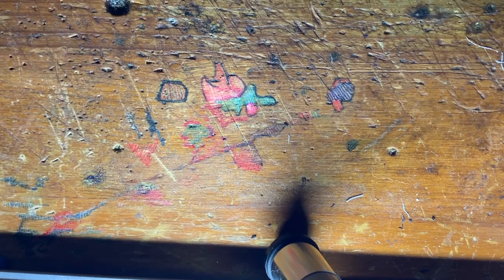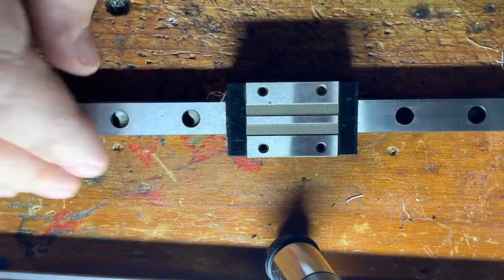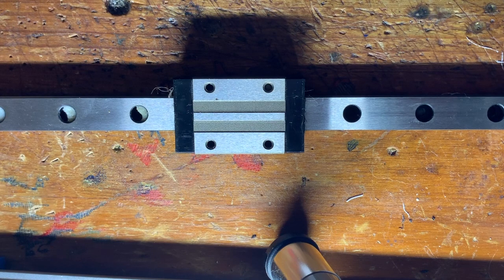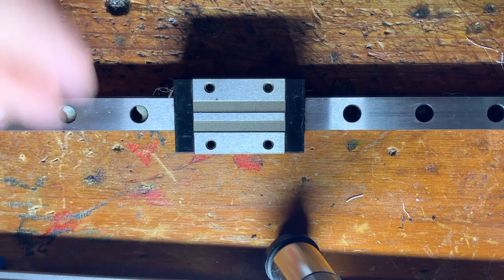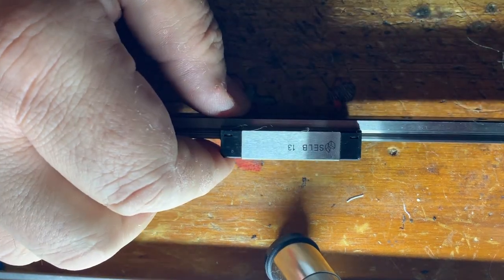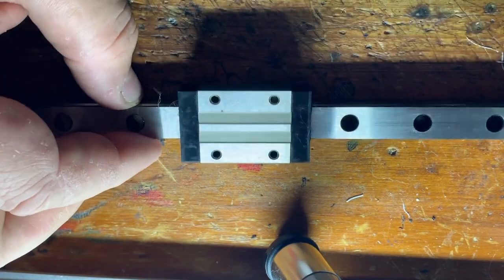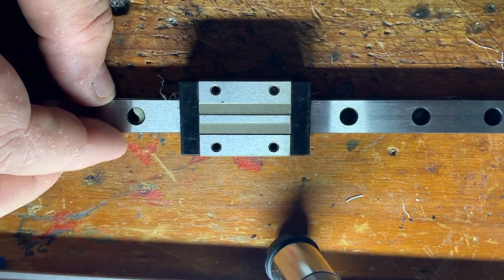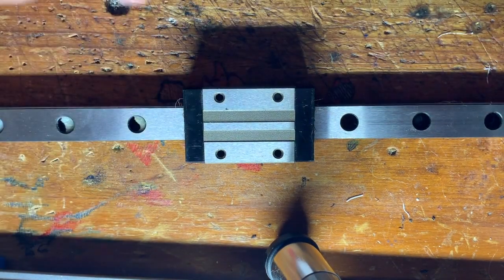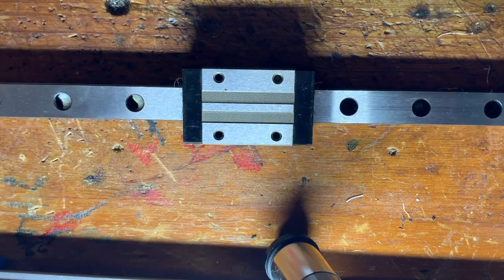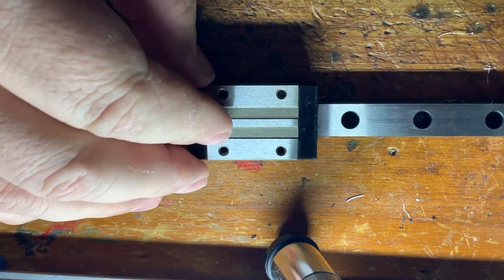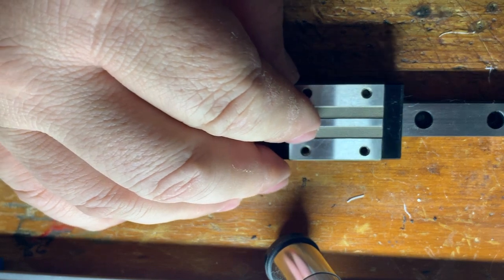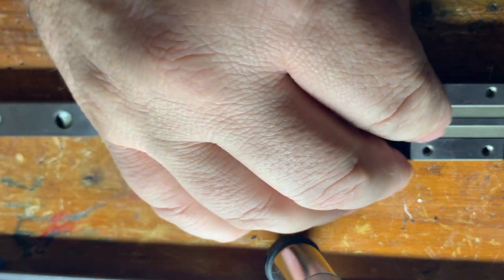Now when you switch to a rail like this—this is a Misumi rail, the SELB 13—comes pre-lubed from the factory. You see the white lithium grease in there. You can see the hair it's picked up along the way. In any case, when you do this with the Misumi, you never feel that grabbing.